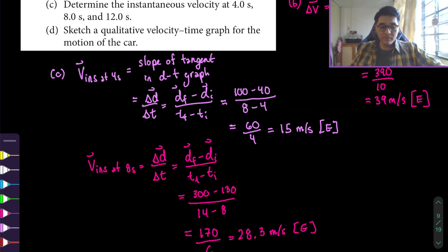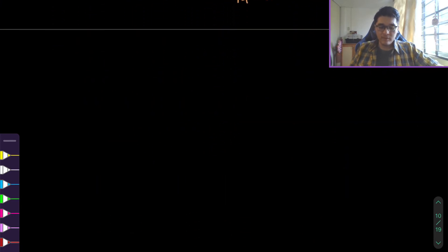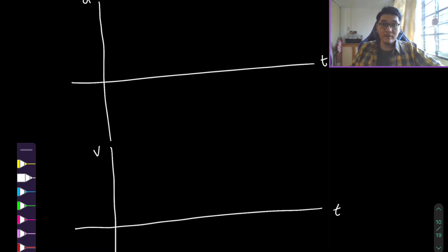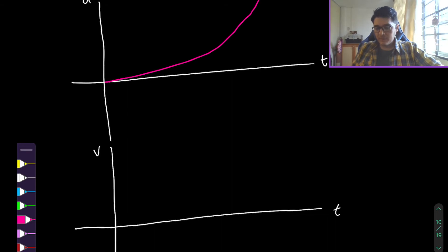For the final part, they want us to sketch a qualitative velocity-time graph for the motion of the car - going from the position-time graph to the velocity-time graph. If you need help with these, we covered them a lot in grade 11; in grade 12 you won't have to do this as much, so don't worry about it too much. It's just for completeness for this section.